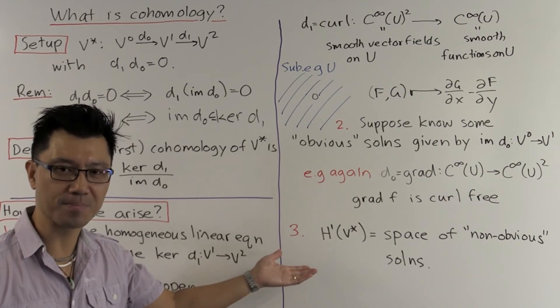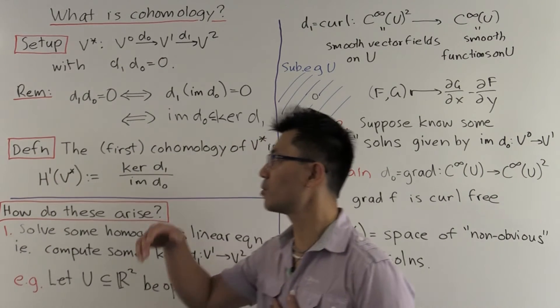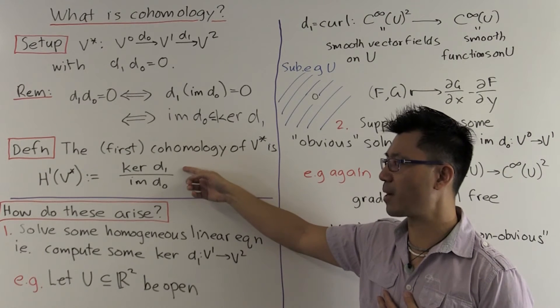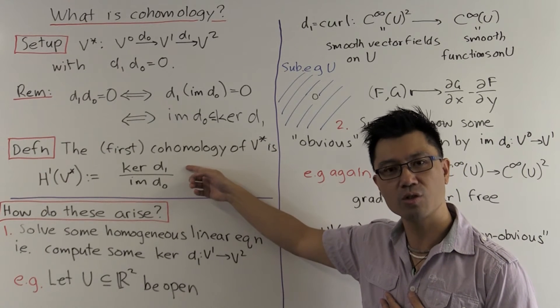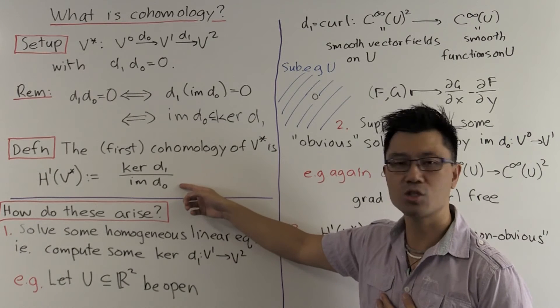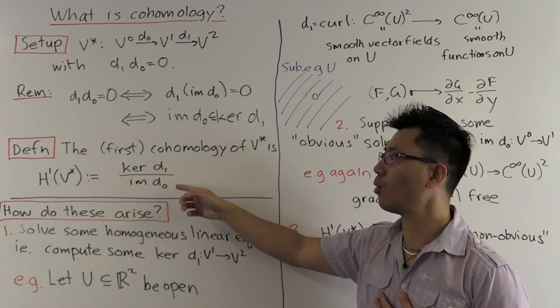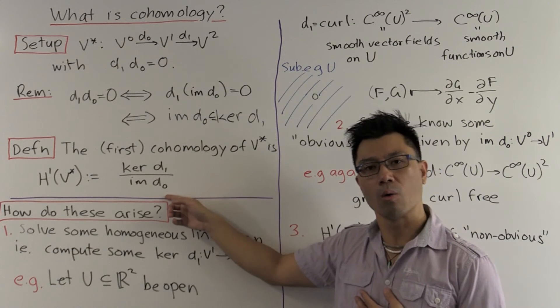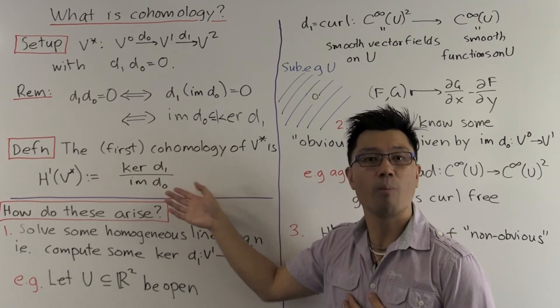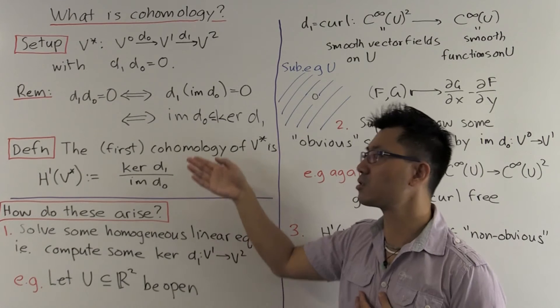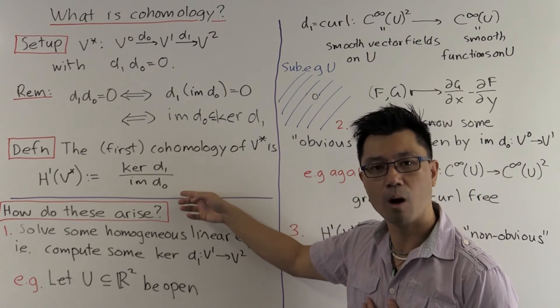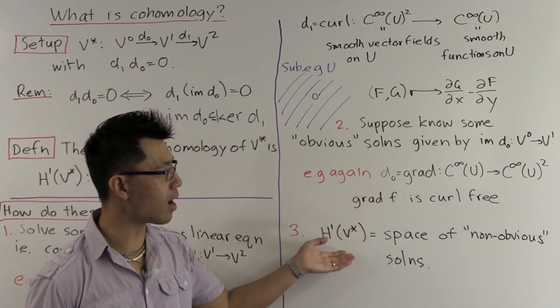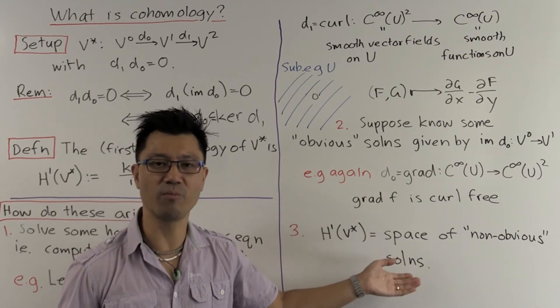So here we have a lot of solutions to this homogeneous linear equation here. If you want a curl-free vector field, a cheap way to get one is to just look at the gradient of f for any scalar potential function f, which just means any smooth function f in this case. OK, so what's H1 V star? So remember we've defined it to be the kernel of d1, which is the space of homogeneous solutions to the problem we're looking at, modulo the image of d0.